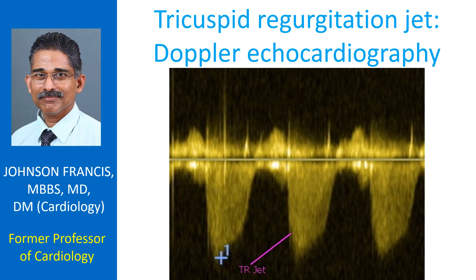Tricuspid regurgitation jet is usually imaged from the apical 4 chamber view, though it can sometimes be imaged from right parasternal and subcoastal views.